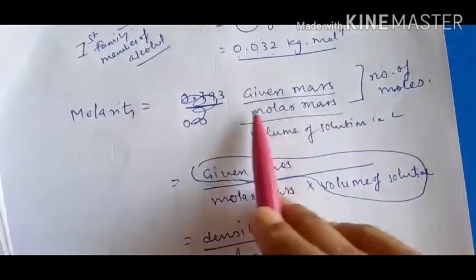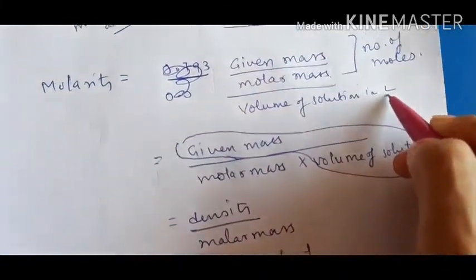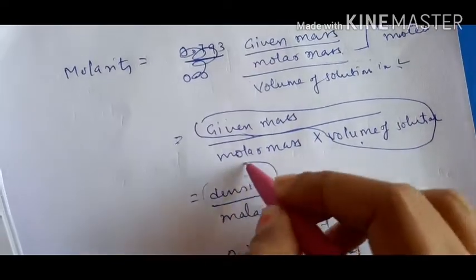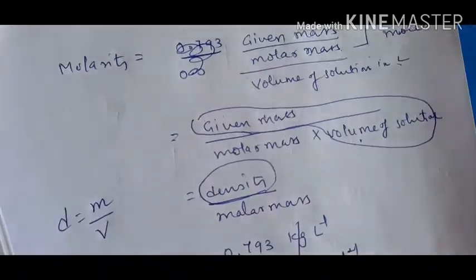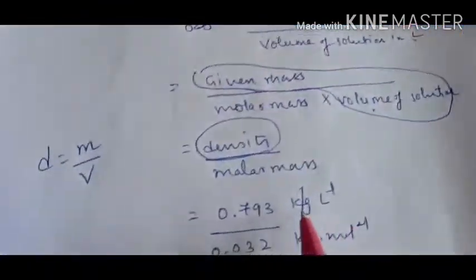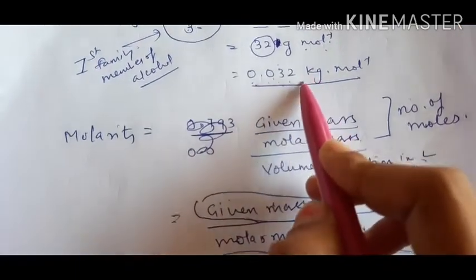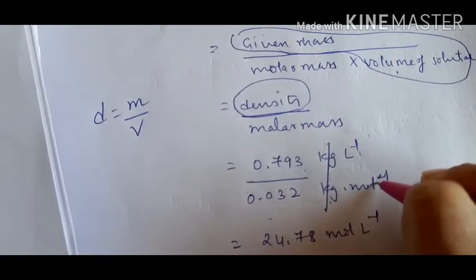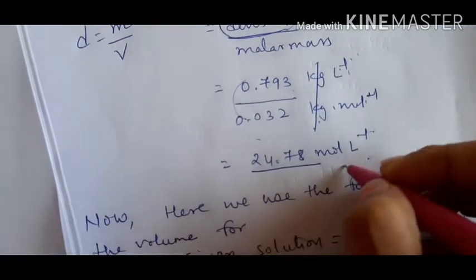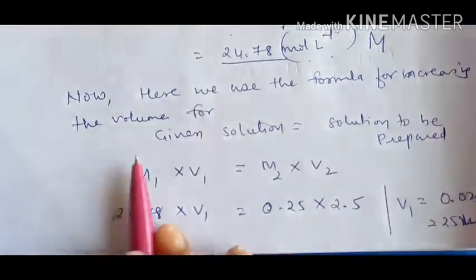Molarity = number of moles / volume in litres = (given mass / molar mass) / volume. Since mass / volume = density, molarity = density / molar mass. Substituting: 0.793 kg/L ÷ 0.032 kg/mol. The kg units cancel, giving molarity = 24.78 mol per litre (approximately 25 M).